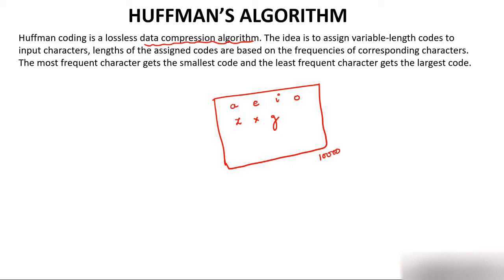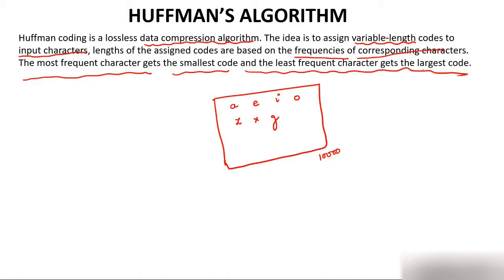The idea is to assign variable-length codes to input characters. The lengths of assigned codes are based on frequencies. The most frequent character gets the smallest code, and the least frequent character gets the largest code.